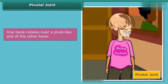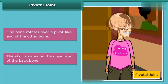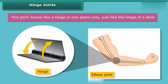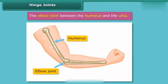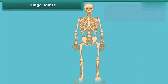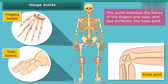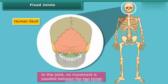In a pivotal joint, one bone rotates over a pivot-like end of the other bone — like the skull rotating on the upper end of the backbone. In a hinge joint, movement occurs in one plane only, just like the hinge of a door. Examples include the elbow joint between the humerus and ulna, the joints between finger and toe bones, and the knee joint. In a fixed joint, no movement is possible between the two bones — the sutures between the bones of the skull are an example.